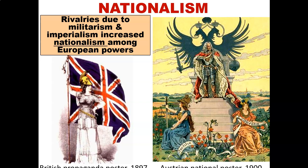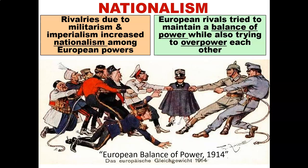Continuing on with nationalism — rivalries due to militarism and imperialism increased nationalism among European powers. You can see from the political cartoons here basically propaganda which emphasizes nationalism, in this case between the British and also Austria. European rivals tried to maintain a balance of power while also trying to overpower each other.